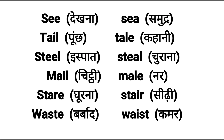Then 'mail' — M-A-I-L — mail mani chitthi. Jaise email mein bhi aapne ye spelling dekhi hogi. Aur doosra 'male' — M-A-L-E — yani male/female wala male. Next is 'stare' — stare means ghurna. Aur doosra hai 'stair' — stair mani seedi (steps). Aur 'waste' — waste mani barbaad karna hota hai. Aur doosri spelling W-A-I-S-T — waist means kamar.